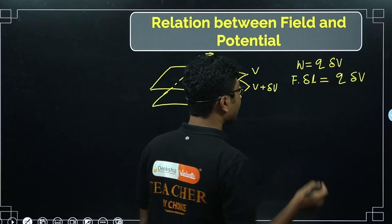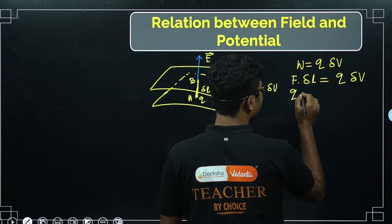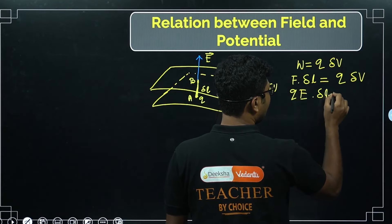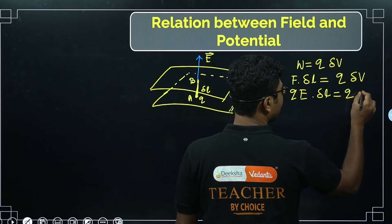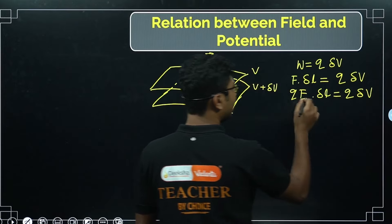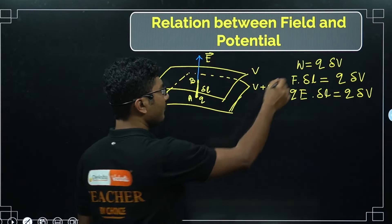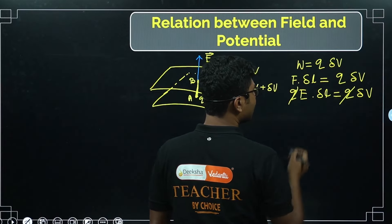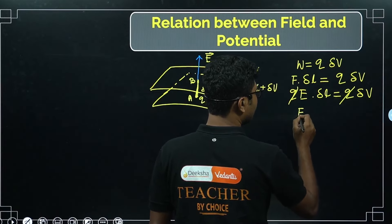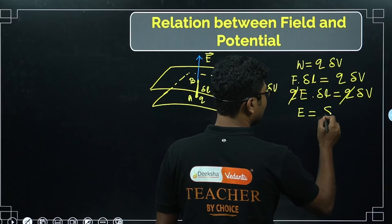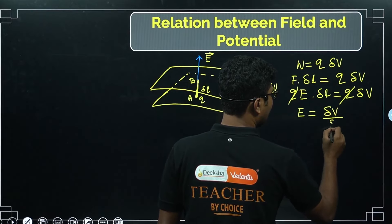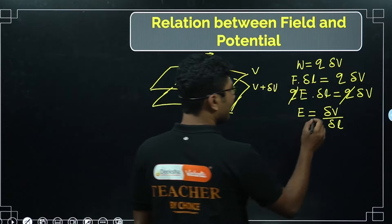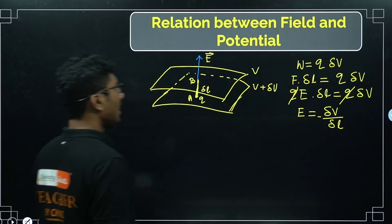Since force F = QE in electrostatics, substituting: QE × δL = Q × δV, and Q cancels. So magnitude-wise, E = δV / δL. More accurately, there is a negative sign: the x-component of electric field is Eₓ = −δV/δx. The negative sign arises because the electric field points from higher potential to lower potential — in the direction of the field, potential is decreasing.